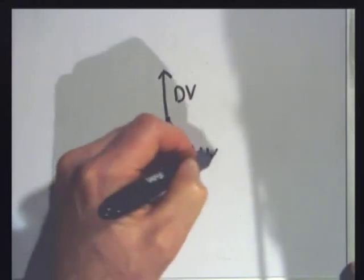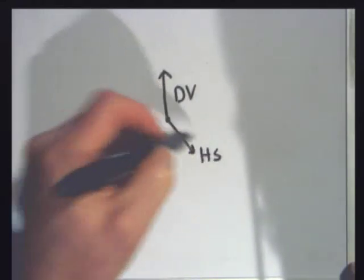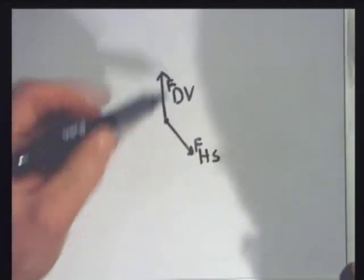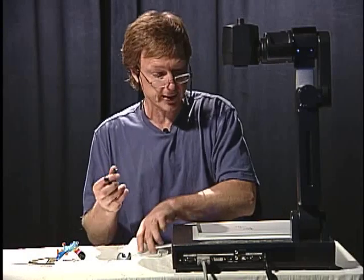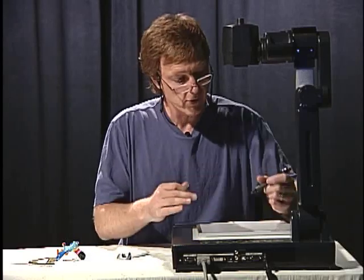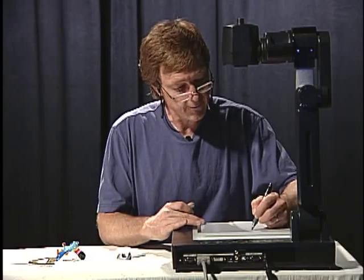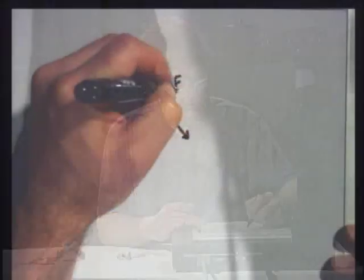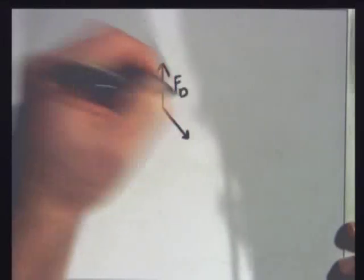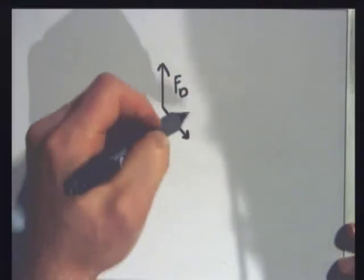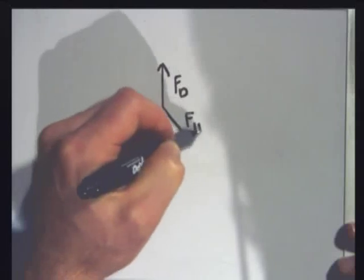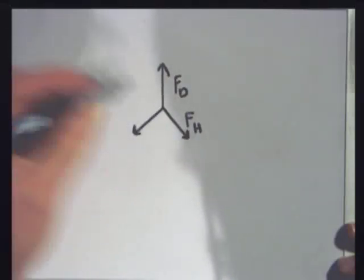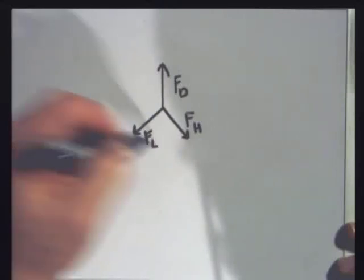Han Solo applying a force in this direction. I'll call that FHS and FDV. I'll use a subscript. I'll use this F, capital F for force. I'll be sure to rewrite that so you can read it. Call this F. I'll just call it D, force of Darth Vader. This is the force of Han Solo. And this is the force of Lando Calrissian.